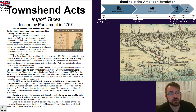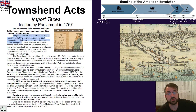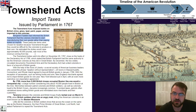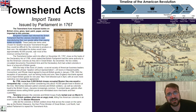Benjamin Franklin had informed the British Parliament that the colonies intended to start manufacturing their own goods rather than paying the duties on imports. This violates the entire idea of mercantilism, which is where colonies should not be allowed to do that. The whole point of the Navigation Acts is to say you can't make stuff in the colonies — you have to buy stuff from England so that England gets rich. So Benjamin Franklin goes to the British government and says, look, we're tired of these taxes, so we're just going to start making this stuff ourselves.